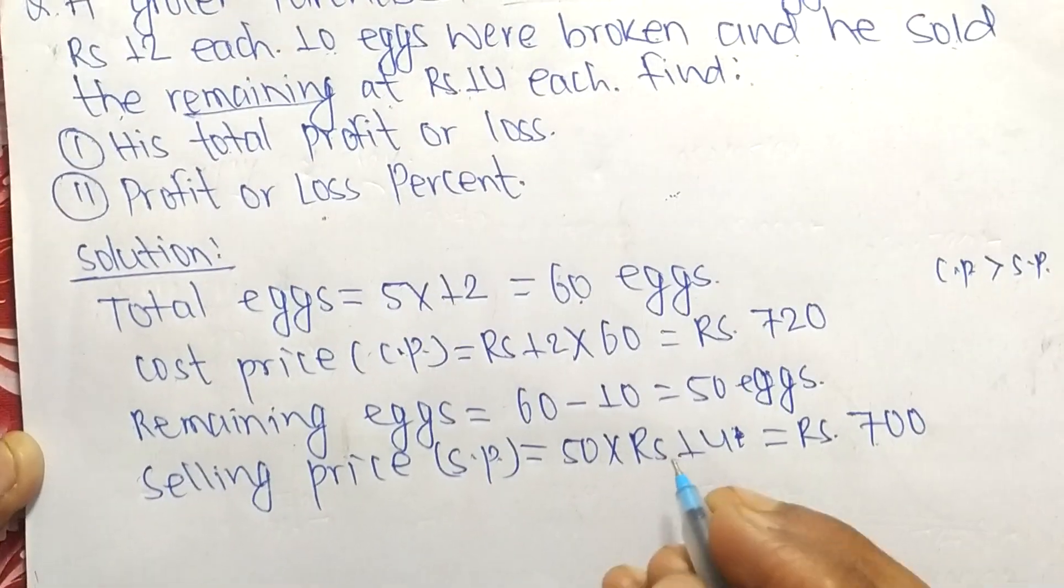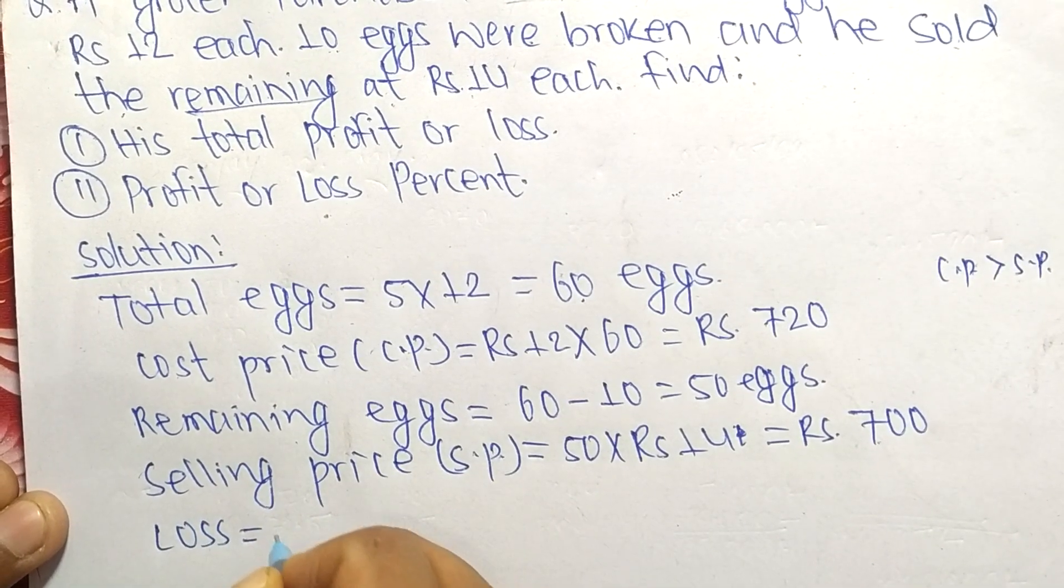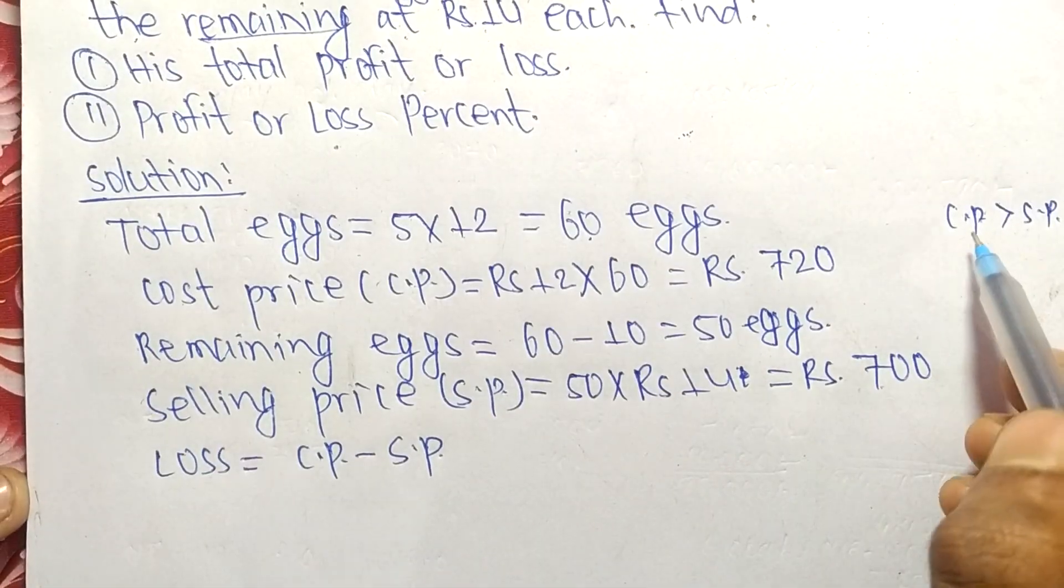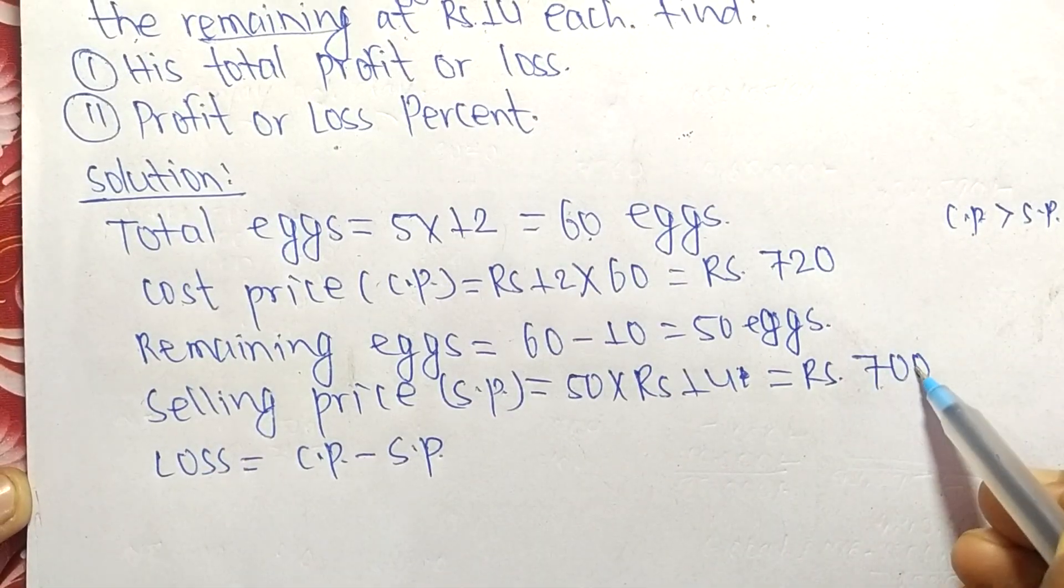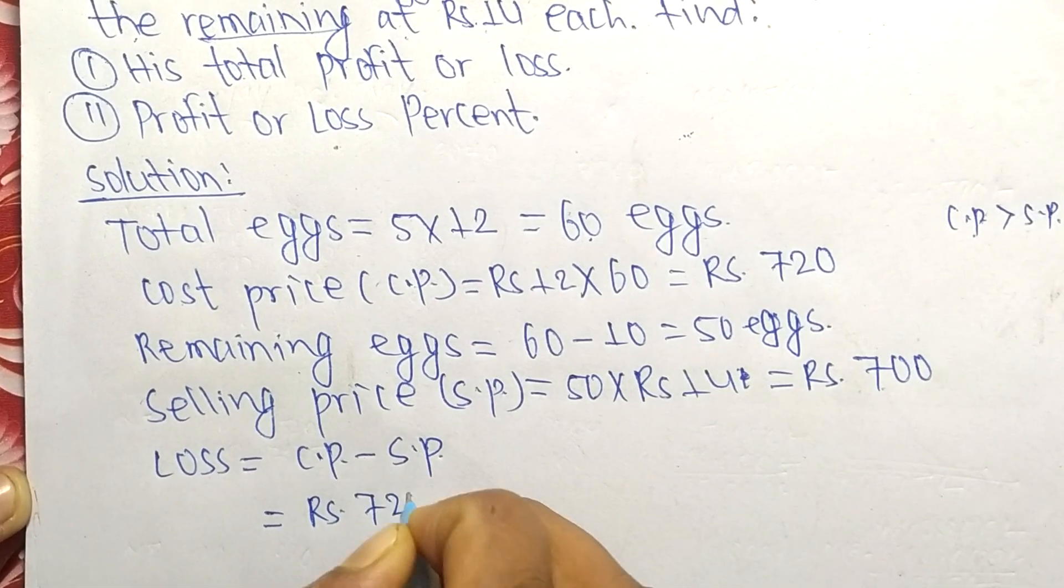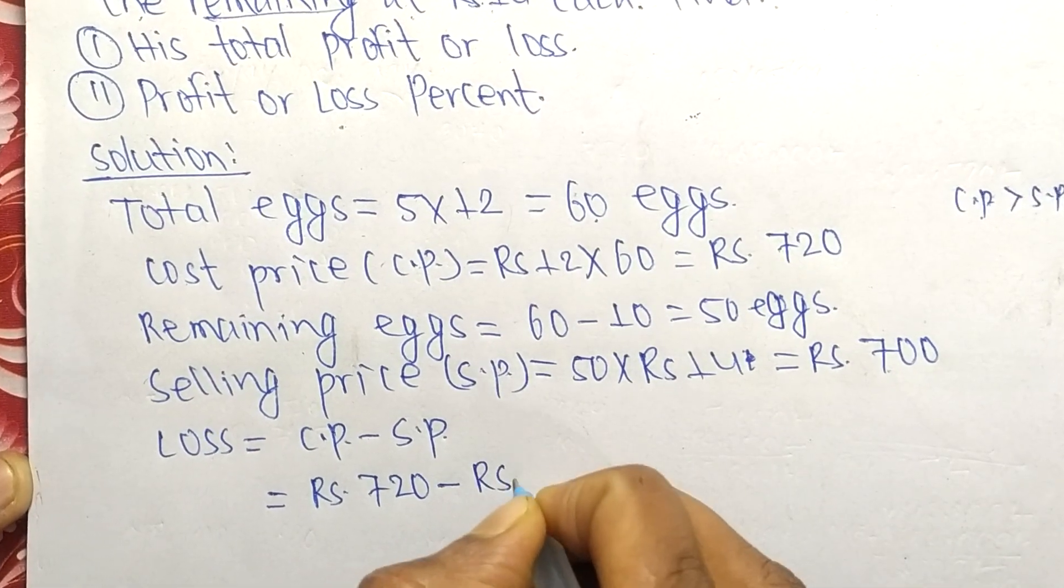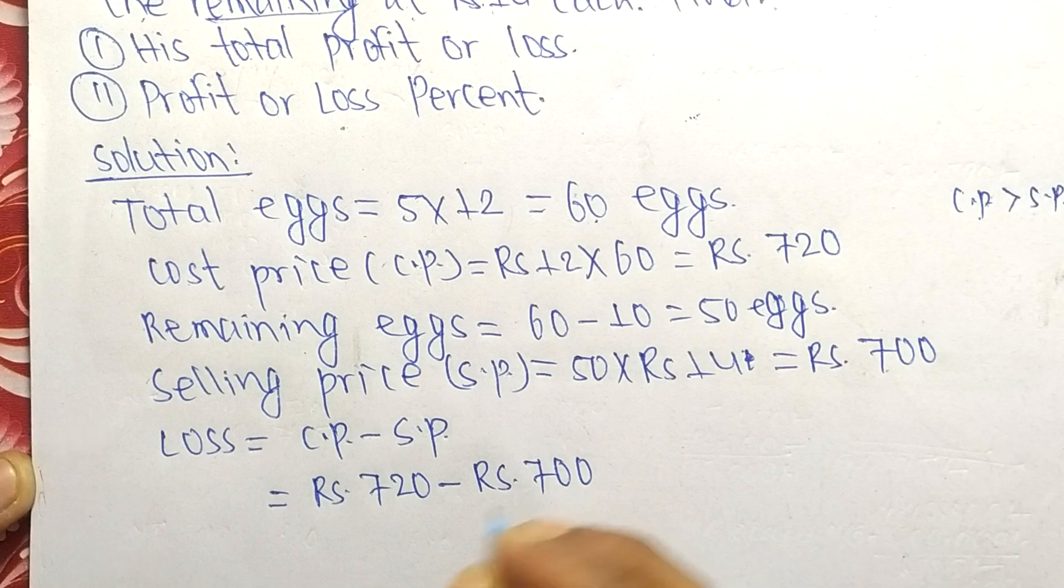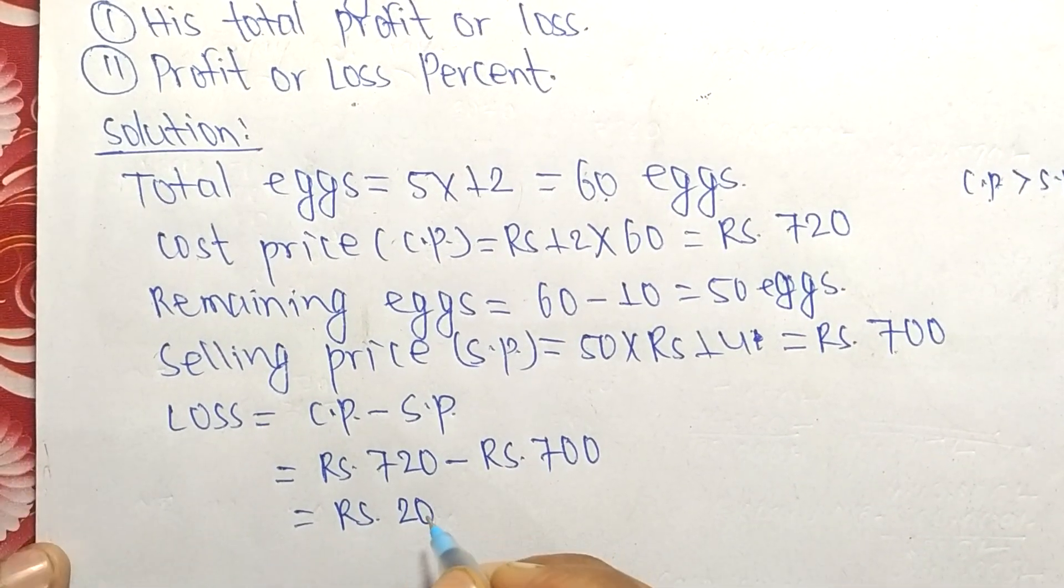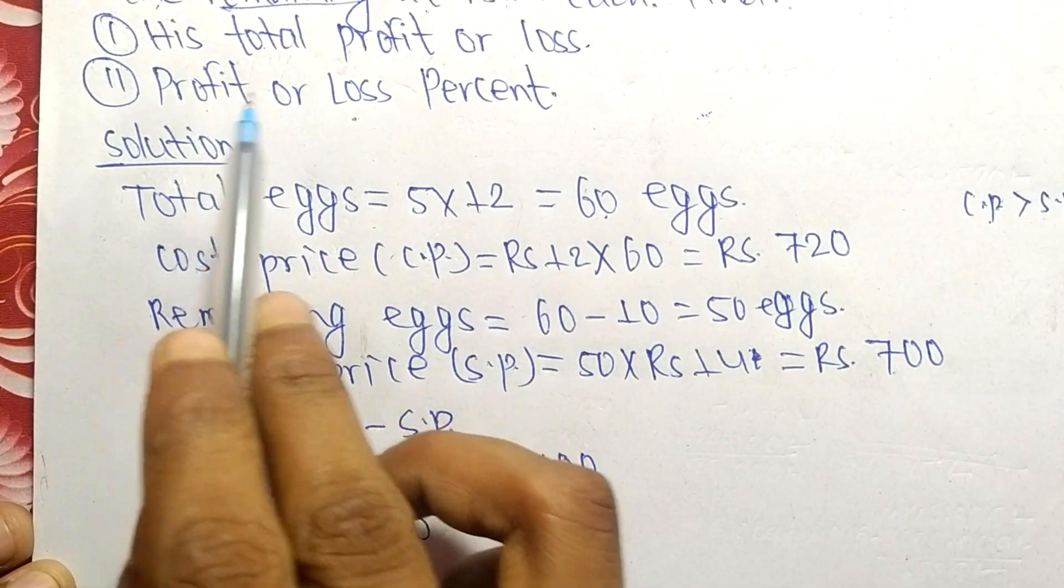Loss = CP - SP, because CP is greater than SP. So, cost price Rs 720 minus selling price Rs 700 = Rs 20. Therefore, Rs 20 is the total loss.